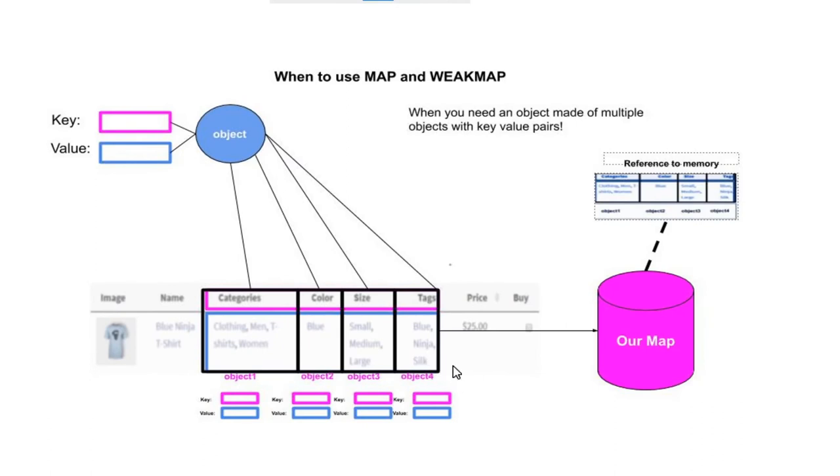So that's essentially what a map does and this is a practical example of where you would actually use one. If you're building out some functionality, you might want to not just build out objects for each one of these, you want to combine them together to apply to the main object, which in this case is our product t-shirt.